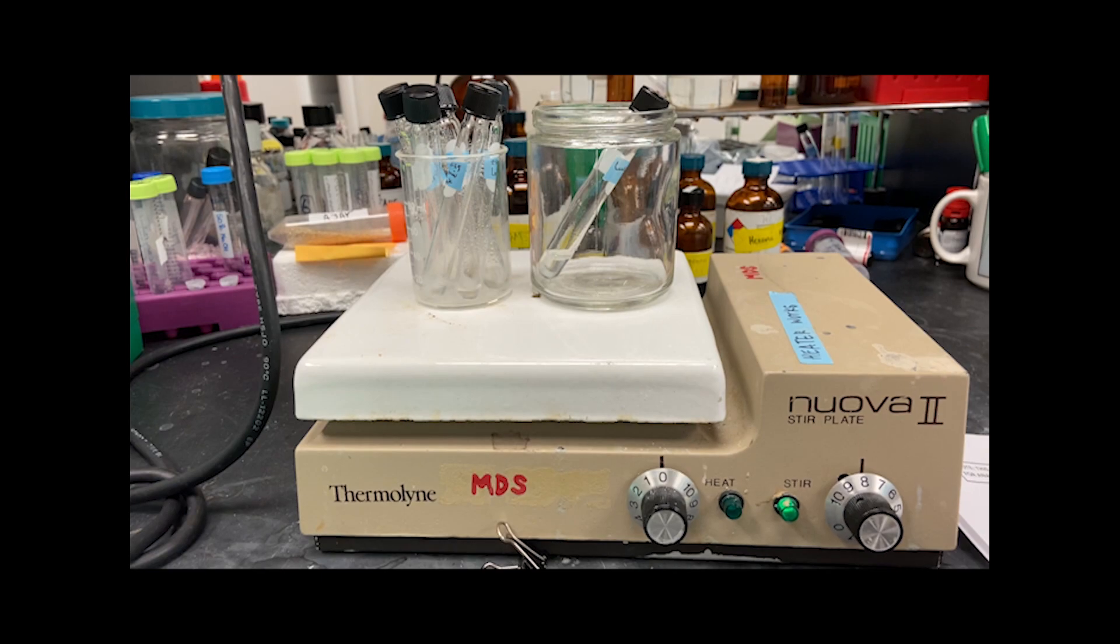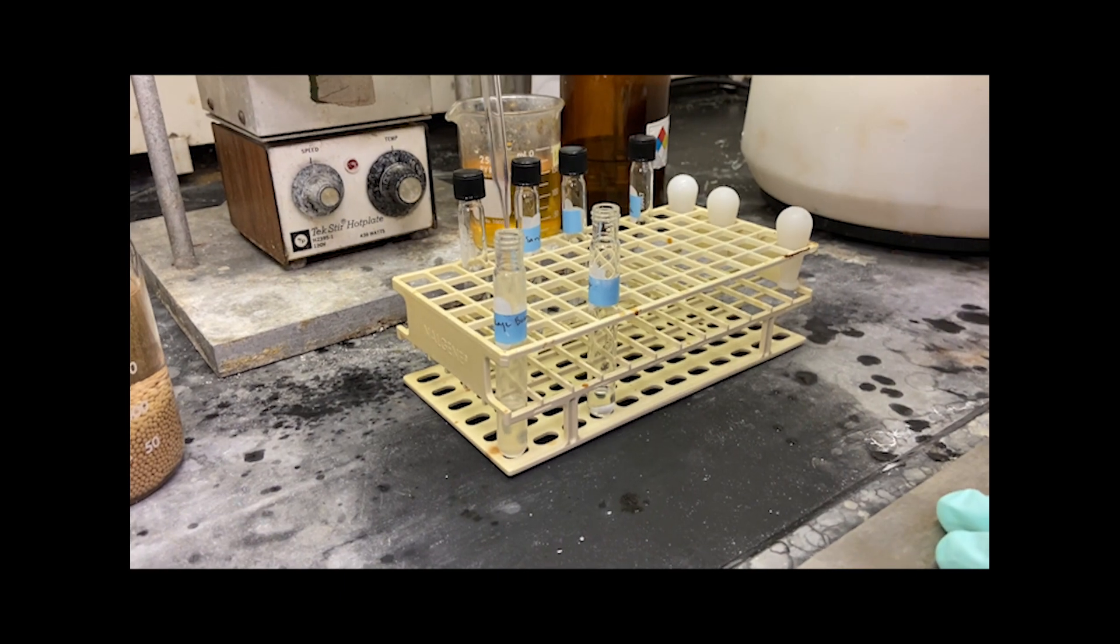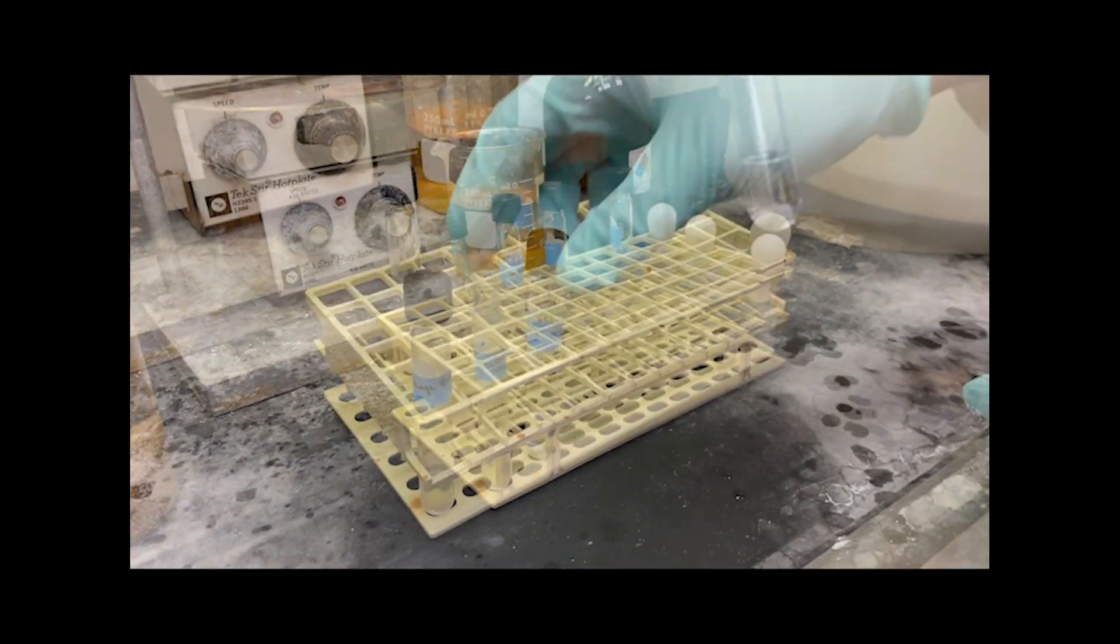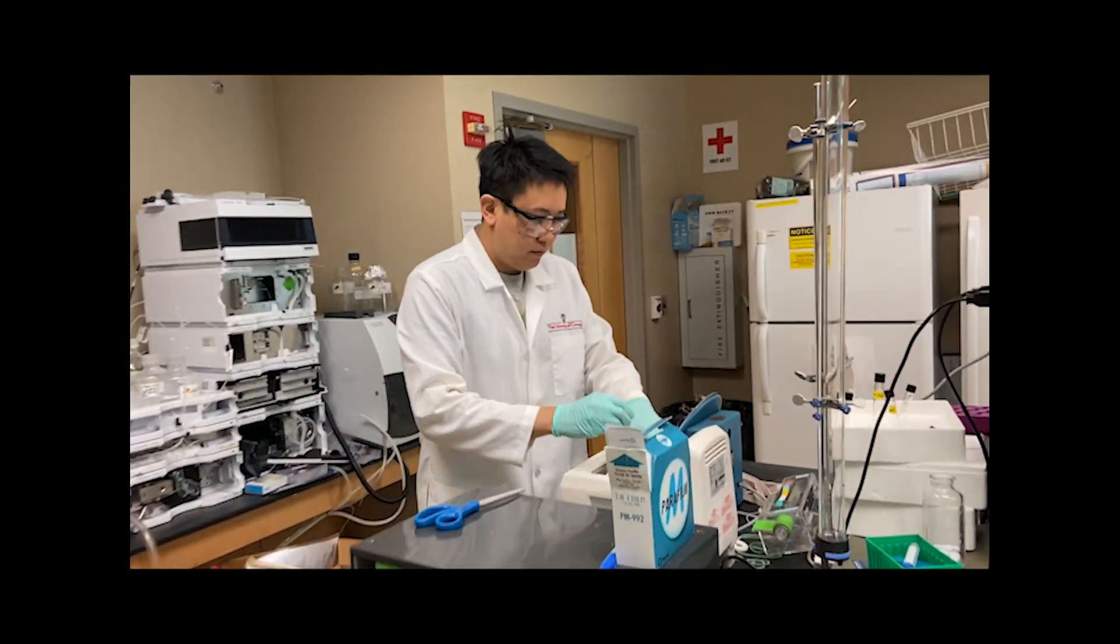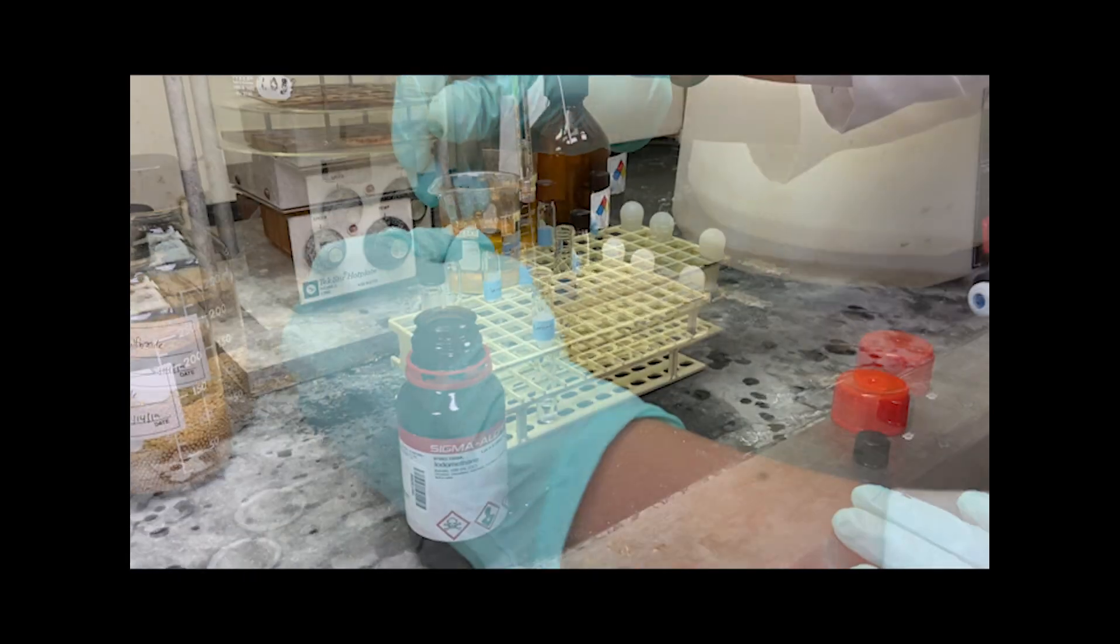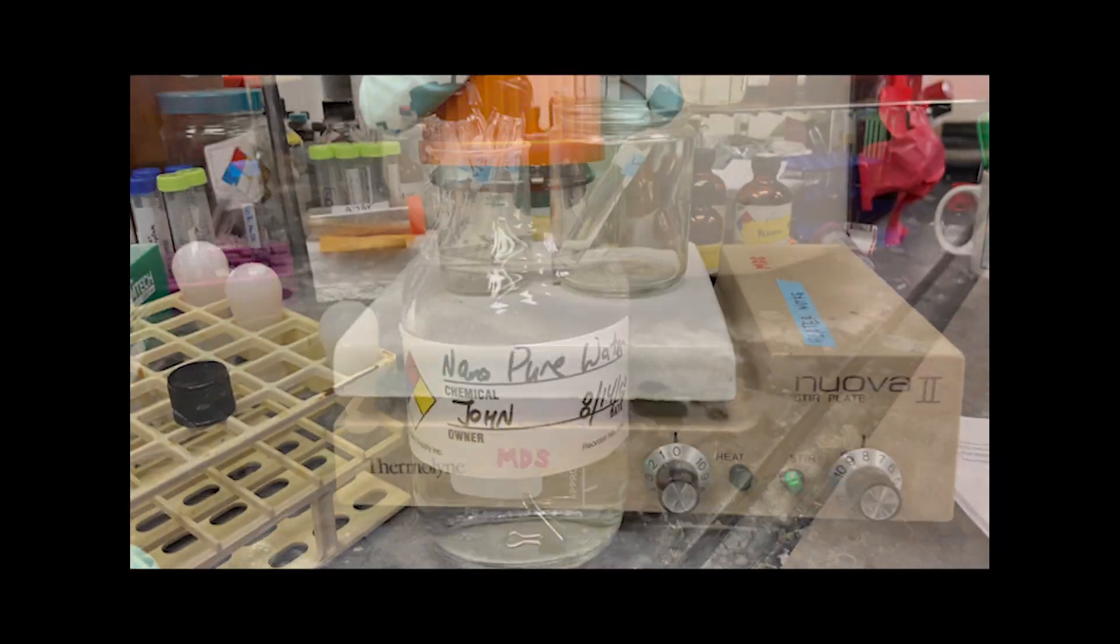To try to ensure complete methylation, a second round of base and iodomethane addition is effected. A second methylation is not necessary in some cases, such as oligosaccharides. 400 microliters of our base is added again and allowed to sonicate for 30 minutes, followed by another 100 microliter addition of iodomethane and a 40 minute spin.